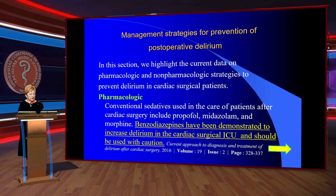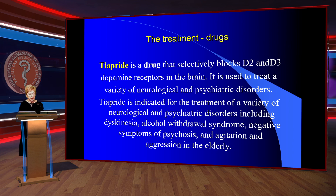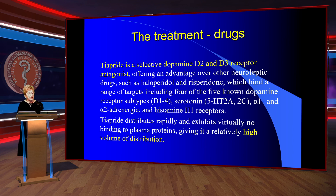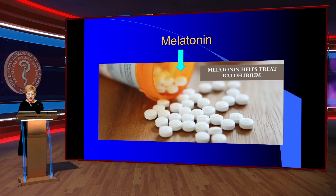Benzodiazepines have been demonstrated to increase delirium in the cardiac surgical ICU and should be used with caution. Regarding drugs: Diaprit selectively blocks dopamine D2 and D3 receptors in the brain and is a selective dopamine receptor antagonist with high solubility. Very useful is the alpha-2-adrenergic agonist dexmedetomidine, used in our hospital and other hospitals in Slovakia. Melatonin also helps treat ICU delirium.